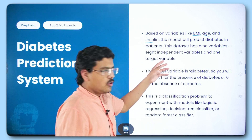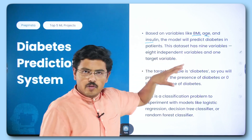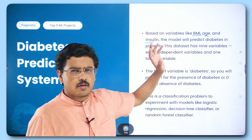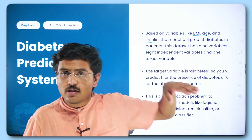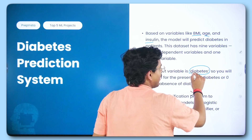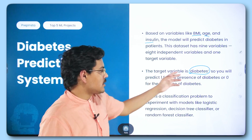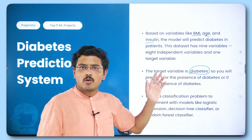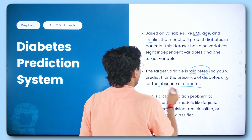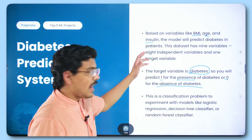You have this dataset on Kaggle. It has nine variables — eight independent variables like BMI, age, insulin, etc., and one target variable which is diabetes: whether it is positive or negative. You will predict one for the presence of diabetes and zero for the absence. So this is a classification problem.